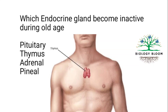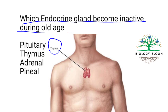Next: which endocrine gland becomes inactive during old age? It is the thymus gland, which is located in the chest. It is well-developed in babies. After puberty, the thymus gland shrinks and eventually becomes inactive.